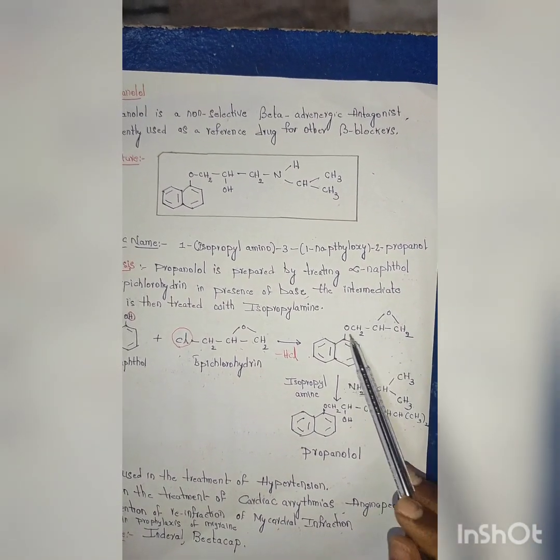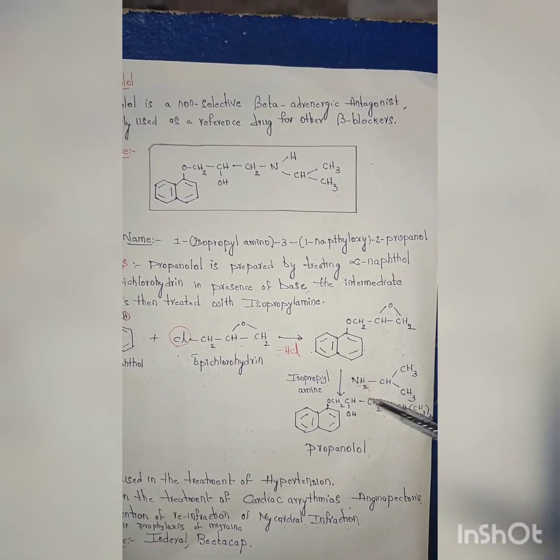It is the time to attach this isopropyl group. Here O-CH2-CH-CH2 with oxygen is present. It will be converting as OH, then again you have CH2, where we will be attaching this entire amino group, that is NH, CH, CH3, CH3. So this is propanolol structure.